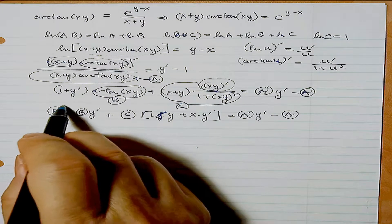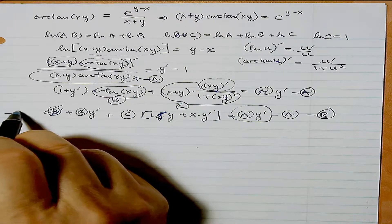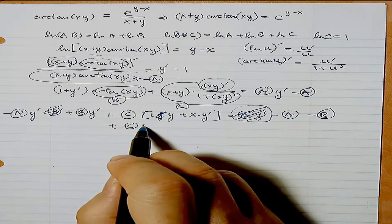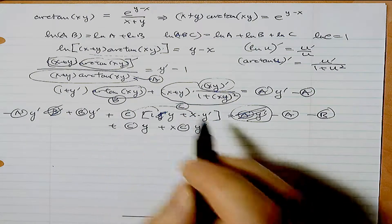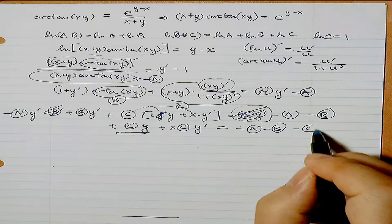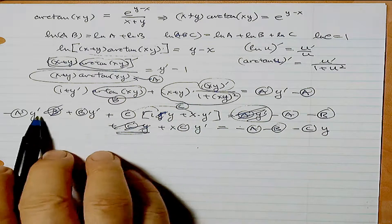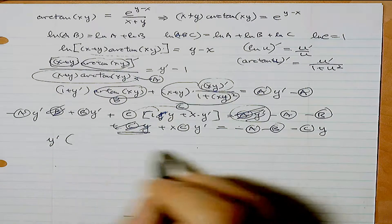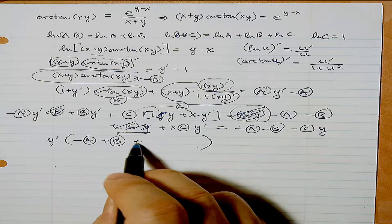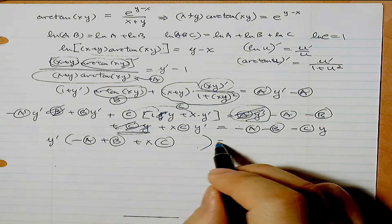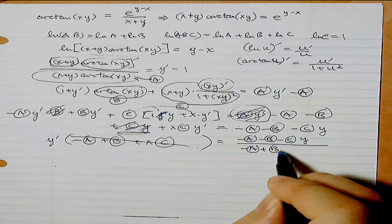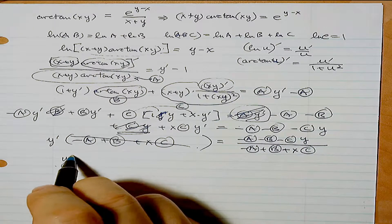Expanding and collecting y' terms: move b over, move a·y' over. We get c·y + x·c·y' = -a - b, then bring c·y over. Factoring out y' on the left: y'(-a + b + x·c) = -a - b - c·y. Therefore y' = (-a - b - c·y) / (-a + b + x·c).